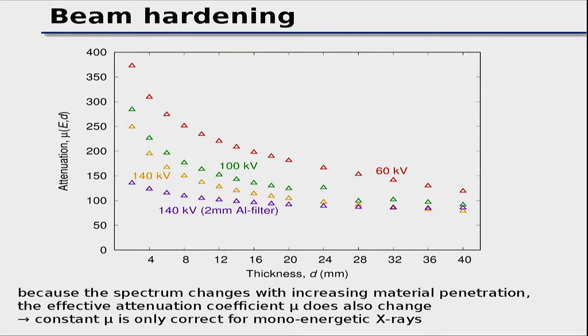Beam hardening is a big nuisance in taking images. If you have something like metal in your sample, you will see artifacts that come exactly from this effect — we'll come back to that.